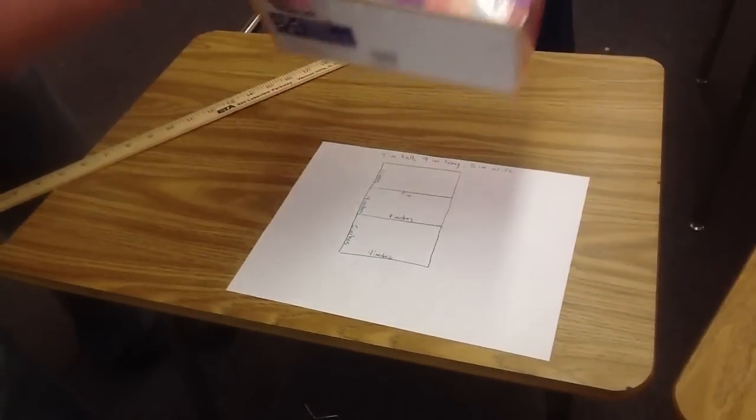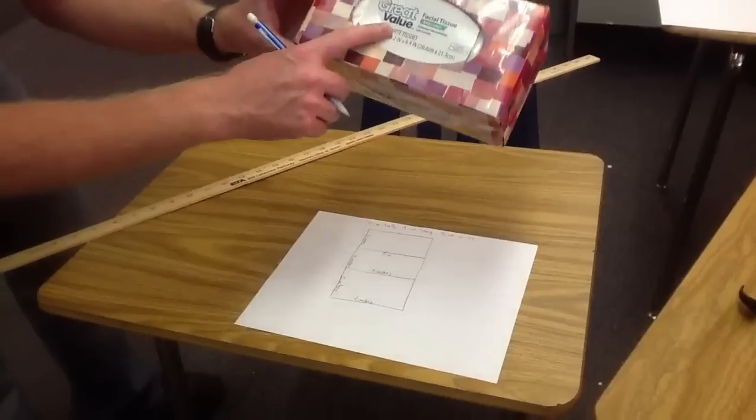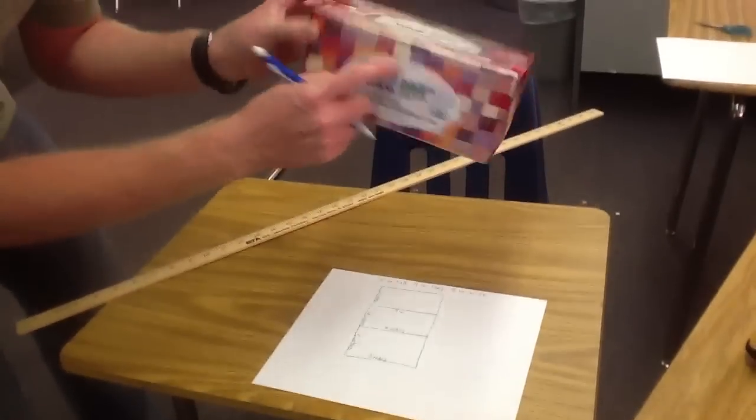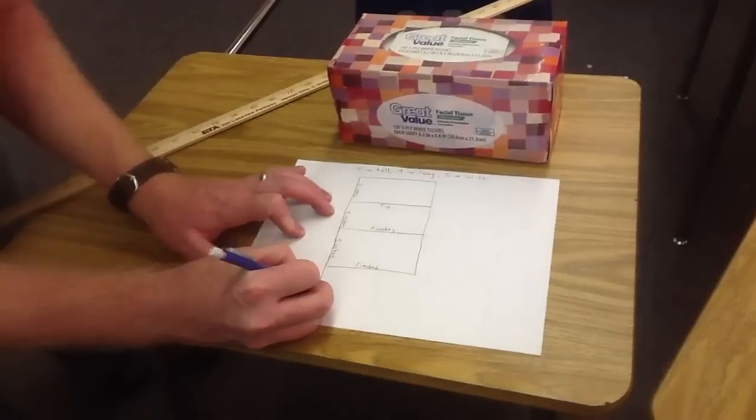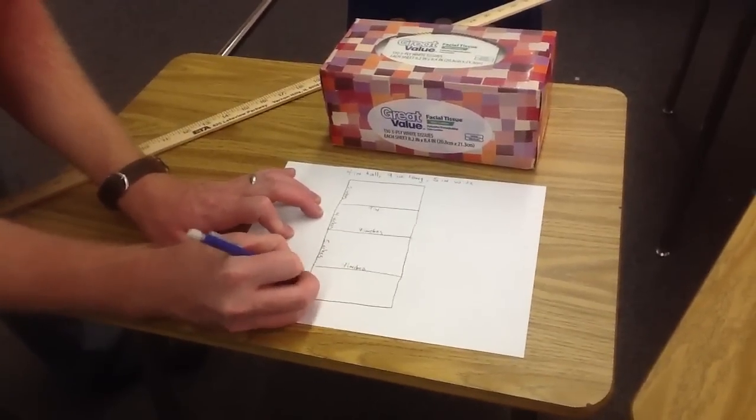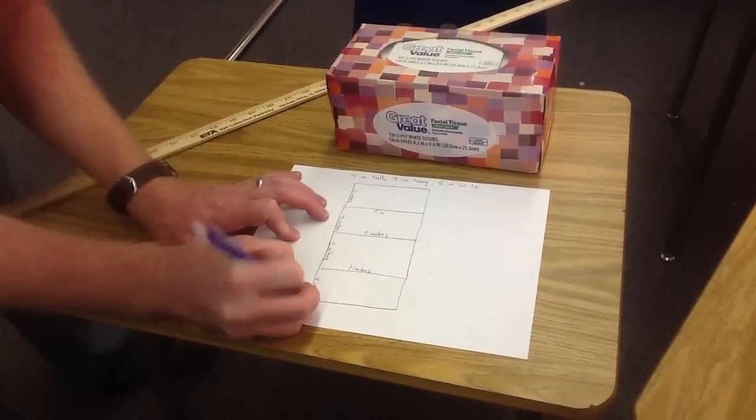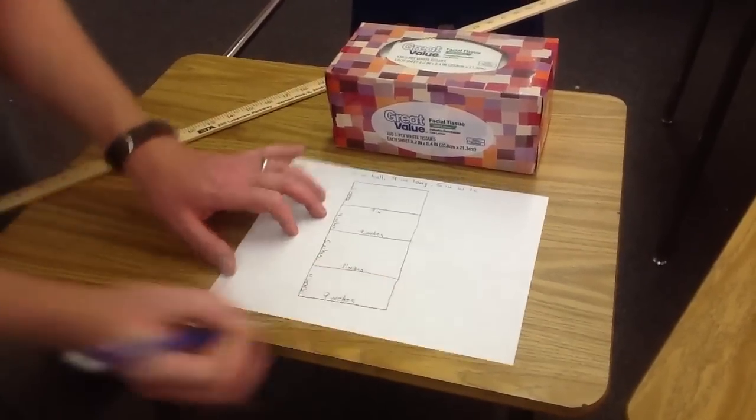Now there's only one more of these long rectangular faces that we have to find. We found the front, found the top, found the bottom. Now we need to find the back. The back should be the same as the front. So it's going to be four inches by nine inches. That's four of my faces.